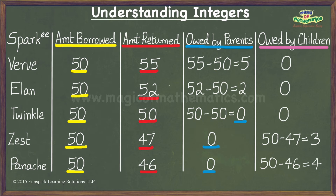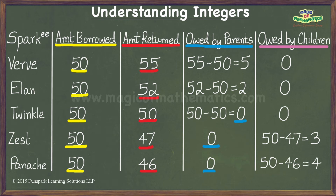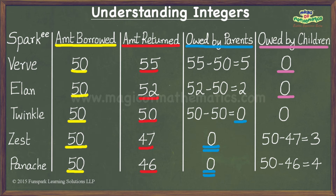We can now see that even if the entries under Amount Returned get erased, we can calculate them easily from the available information. It is clear that when parents owe their children money, the children don't owe anything back, so the zero entries for Verve and Elan don't tell us anything more. Similarly, the zero entries for Zest and Panache under Owed by Parents add no new information. Hence, we can probably merge the two columns labeled Owed by Parents and Owed by Children.